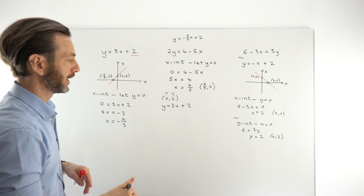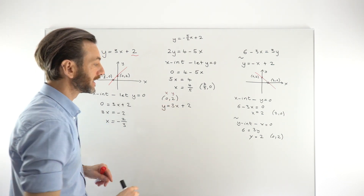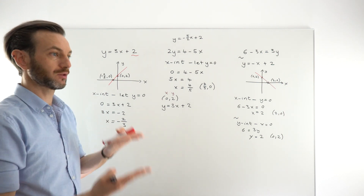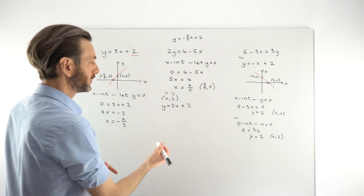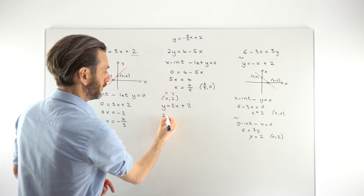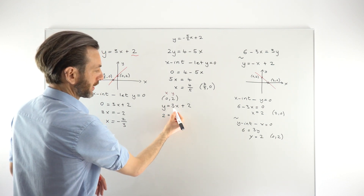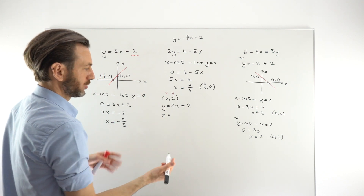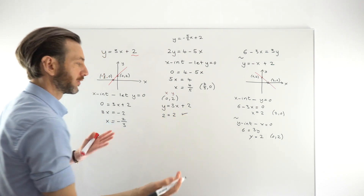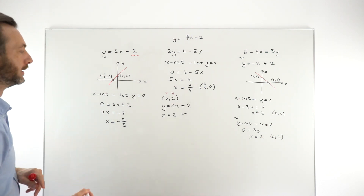What does it mean to satisfy an equation? It means if you take those numbers and put them into the equation, the equation works — the equation expresses two equal quantities. Putting 2 in for y and 0 in for x: we get 2 equals 3 times 0 plus 2, which is 0 plus 2, which is 2. That's correct, confirming that the point (0, 2) does lie on that line.